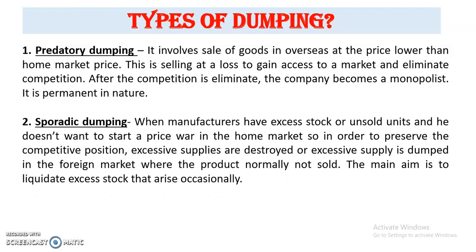Another type of dumping is sporadic dumping. This occurs when manufacturers have excess stock and unsold units, and they don't want to start a price war in the home market. So in order to preserve their competitive position, the excessive supply is dumped in the foreign market. The main aim of sporadic dumping is to liquidate excess stock that arises occasionally. So predatory dumping is permanent in nature and sporadic dumping is occasional in nature.